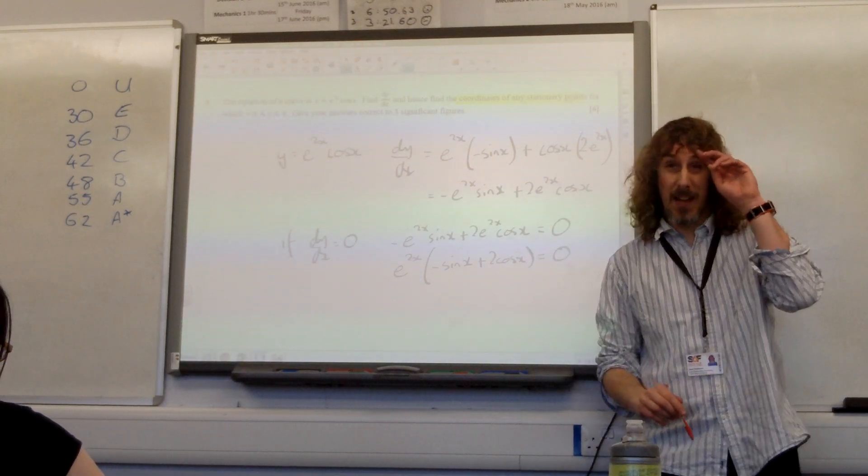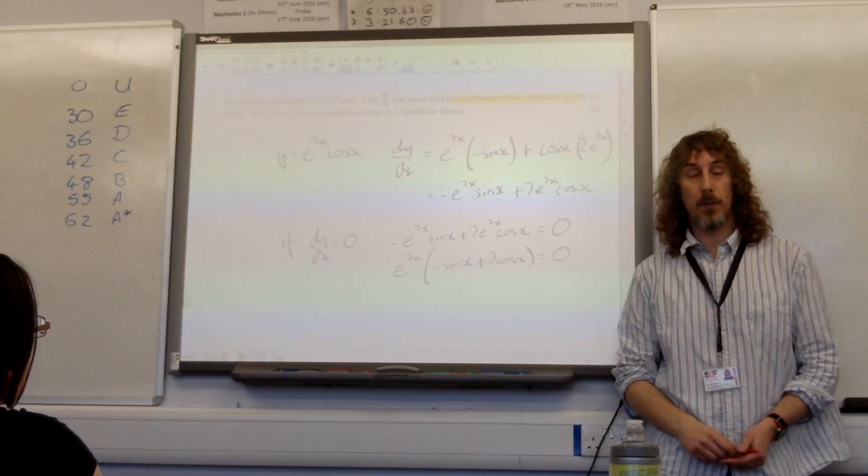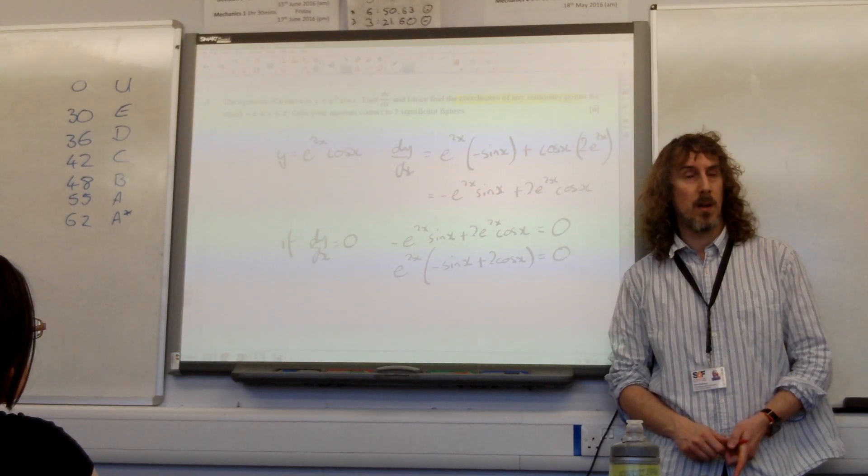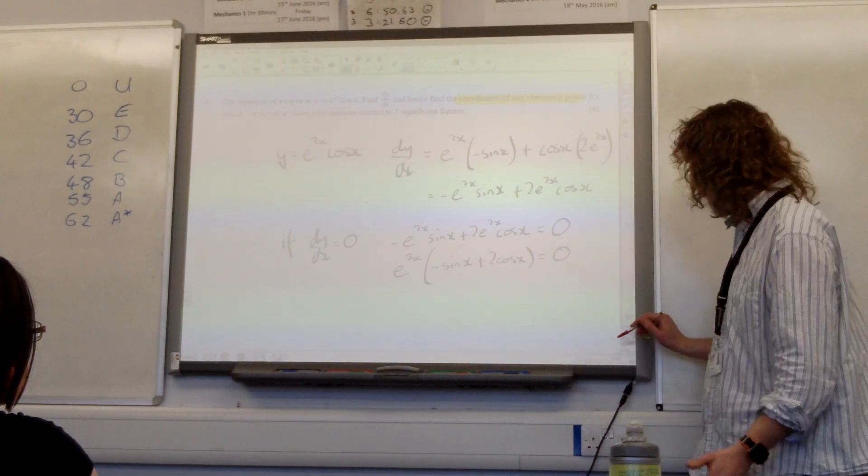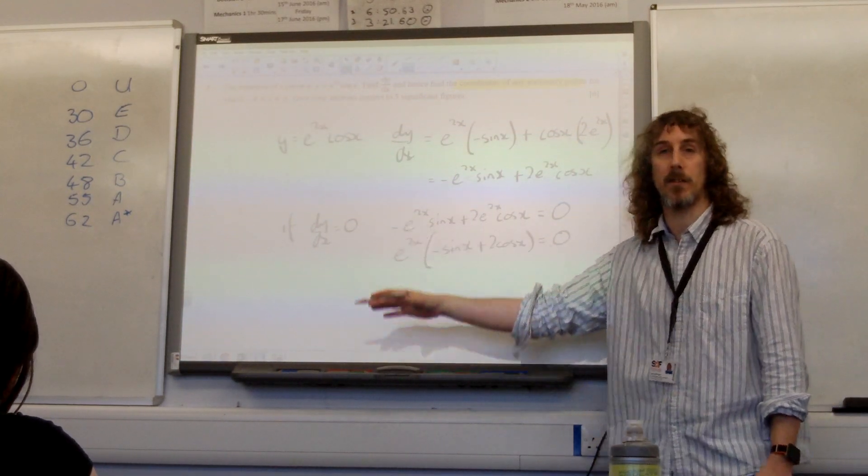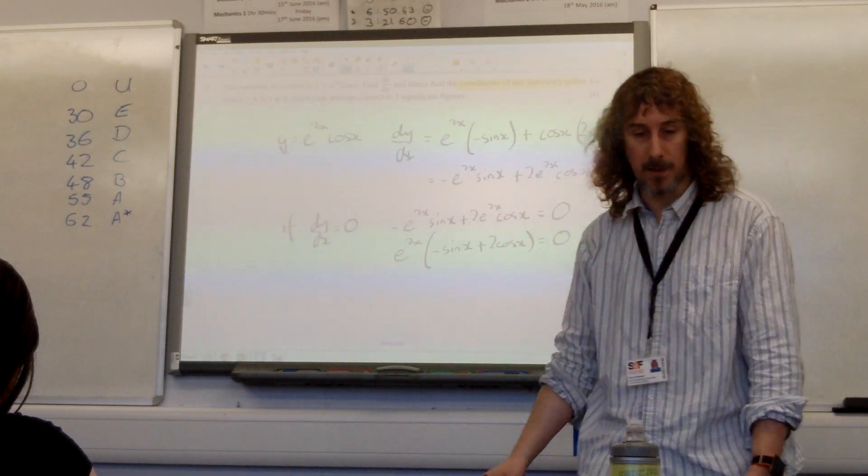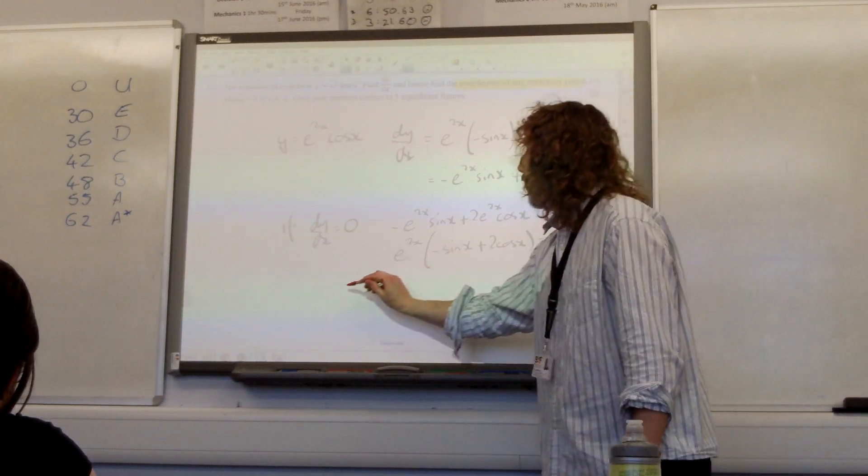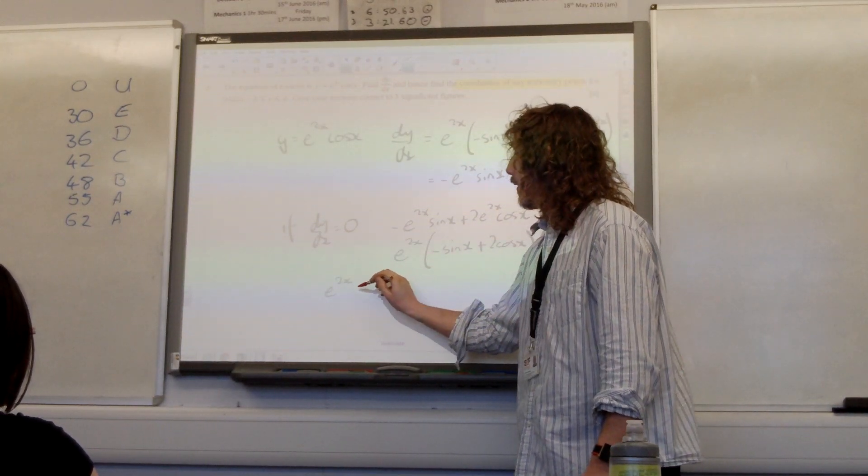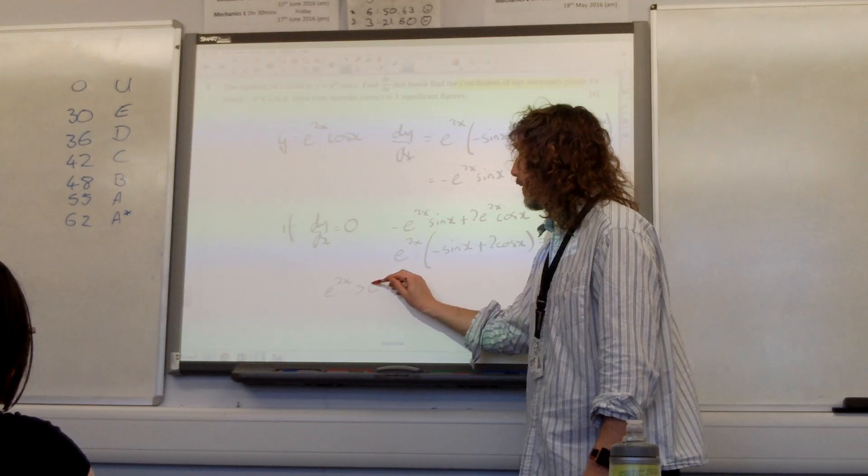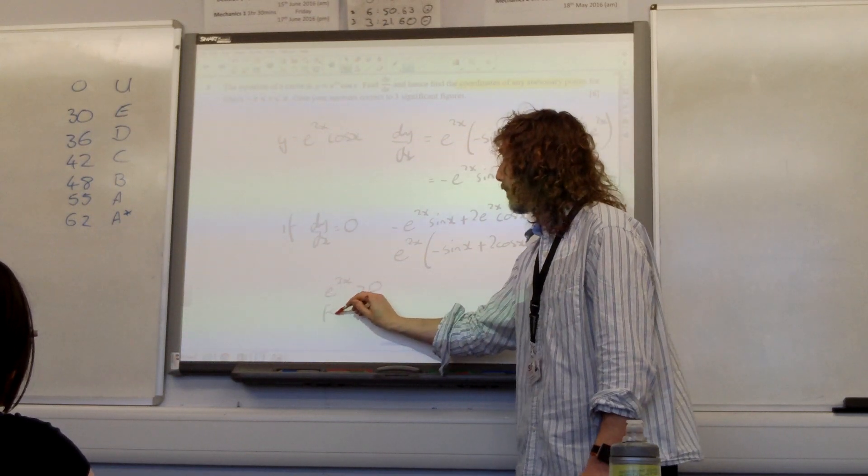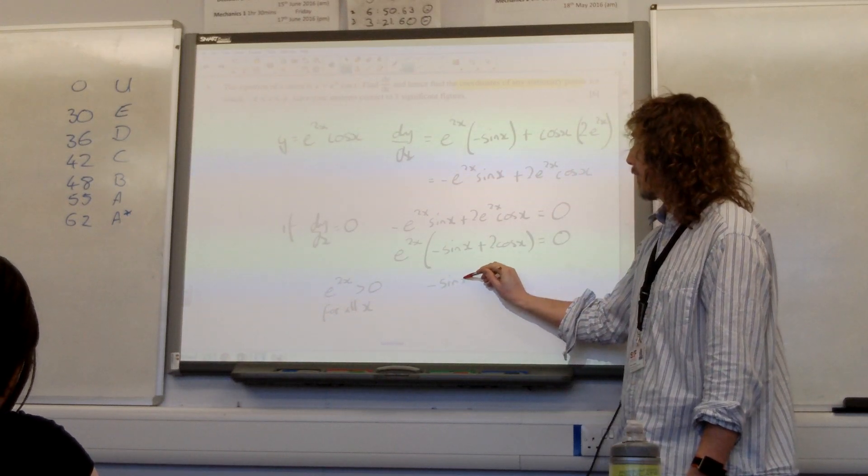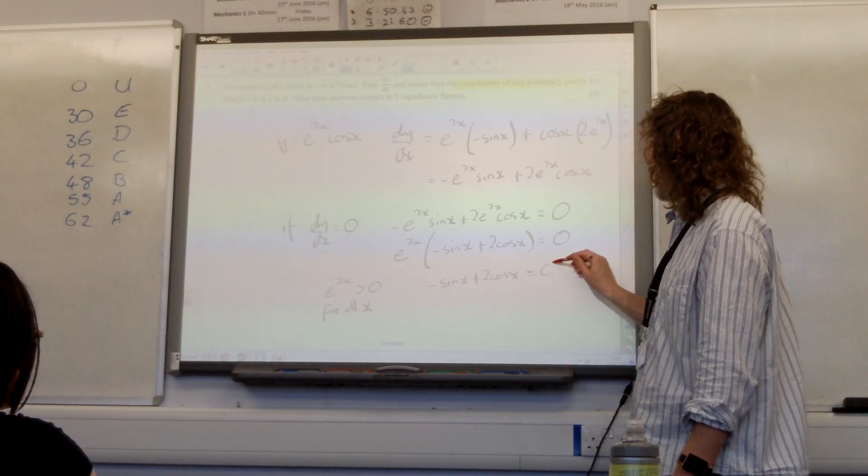Now by this stage in our mathematical journey, we know enough to know that e^(2x) can never be zero. We can make a comment on that, but actually it's enough just to reject it as a solution. e^(2x) is greater than zero for all x. So we're left with -sin(x) + 2cos(x) = 0.